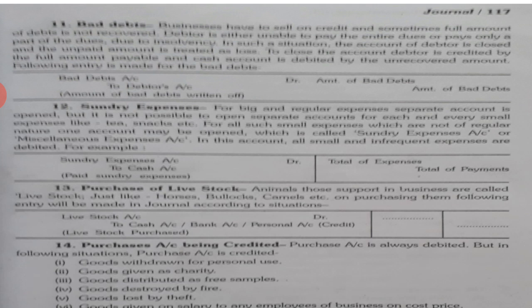Point number 14 is very important. Normally purchase account is debited because what comes into the business is debited. But in certain conditions, purchase account will be credited. Those conditions are: goods withdrawn for personal use by the owner, goods given as charity, goods distributed as free samples, goods destroyed by fire, goods lost by theft, or goods given as salary to employees at cost price. In these conditions, purchase account will be credited because purchase decreases.